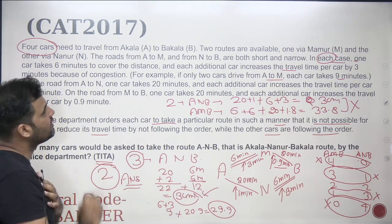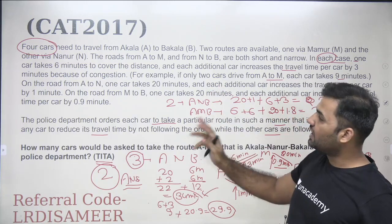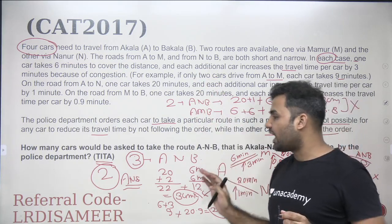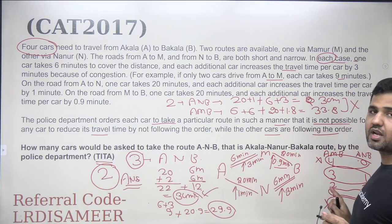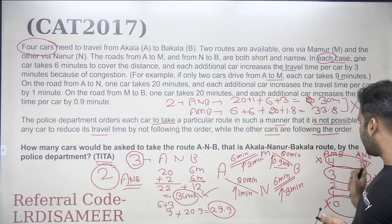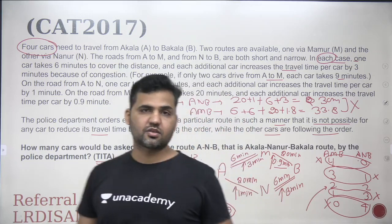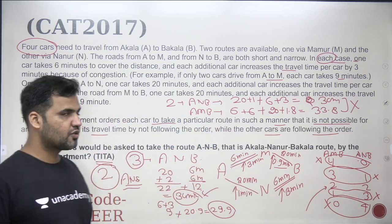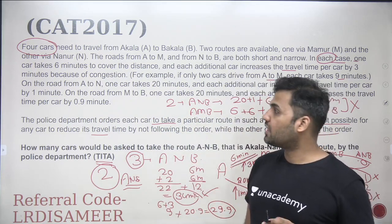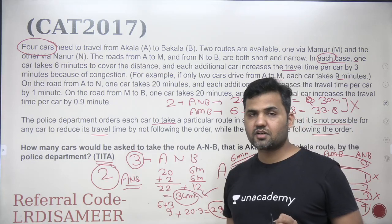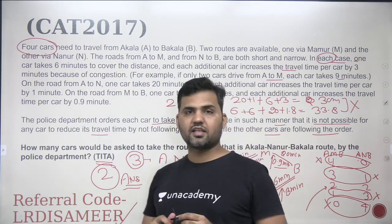This was a seemingly simple question from CAT 2017, but you need to understand the meaning of the increase in time due to additional cars. You should be able to eliminate the cases of 4-0 and 3-1 quickly, leaving only the 2-2 case. The answer to the first question is two. Thank you for watching. I'll discuss the remaining questions of the set in upcoming videos. Please subscribe, share with friends, and use my referral code LRDI Samir for live sessions on Academy Plus.